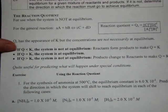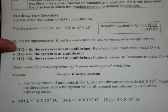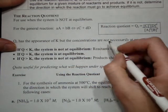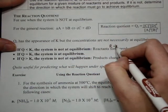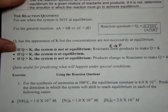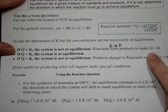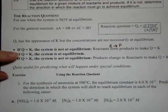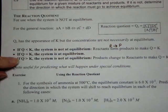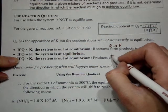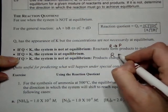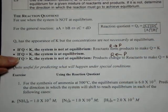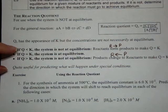If the Q value is less than K, the system is not currently at equilibrium. Your reactants will be changing into products, or the forward reaction will be increased in order to make Q equals K. If the two values are the same, if Q does equal K, then it's already at equilibrium. If Q is greater than K, then you'll have the reverse occurring, products changing into reactants, in order to achieve equilibrium.